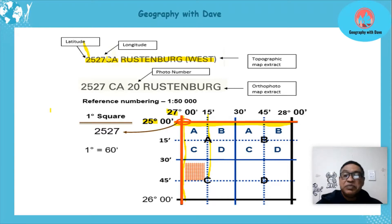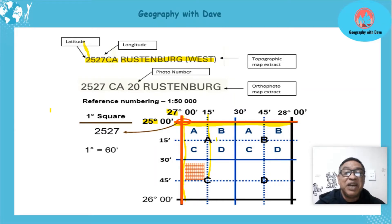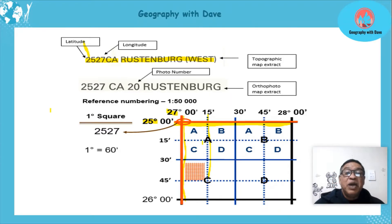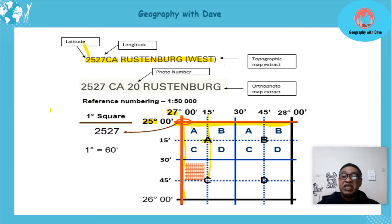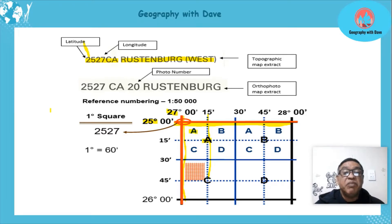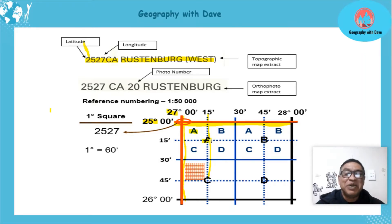The whole area is divided into four larger blocks for easier referencing. This is block A, and there are four map sheets found in block A — each block represents a complete map sheet. So this block would have the map reference 2527 AA. Your teachers say 'big block A, small block A' — that's how I remembered it when I was younger.